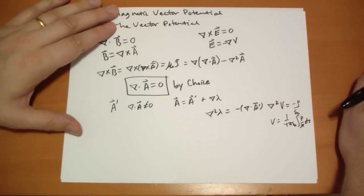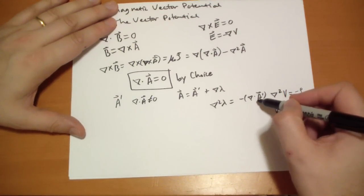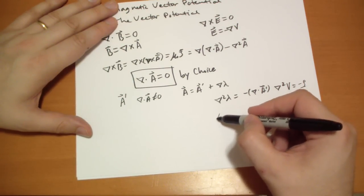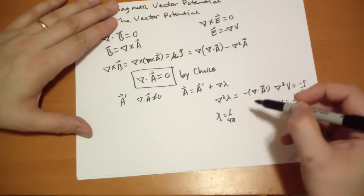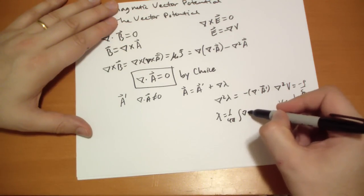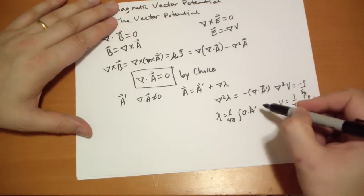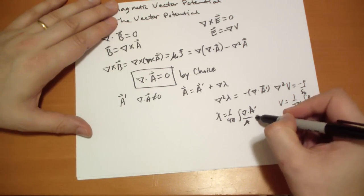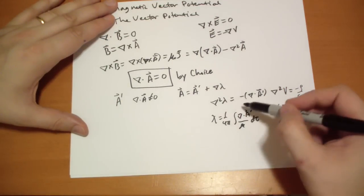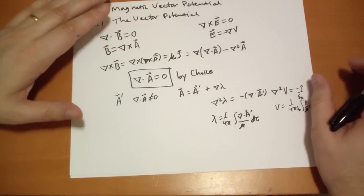And by the same token, if we want the divergence of this A prime vector to go to zero, then we can choose our λ to be 1 over 4π, the integral of the divergence of A vector prime, over r dτ. So using the same logic that gave us that solution, we can use that solution.